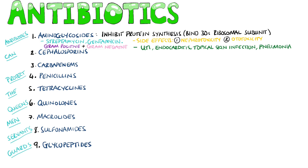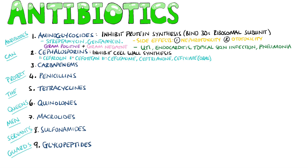Next we have the cephalosporins, which work by inhibiting cell wall synthesis. There are five generations. First generation are quite narrow spectrum and include cefazolin. Second generation is intermediate spectrum, with an example being cefotitan. Third generation are the most well-known, considered broad spectrum, and include cefotaxime, ceftriaxone, and cefixime. Note that ceftriaxone should not be given with calcium solutions as it can cause fatal calcium precipitation in the lungs and kidneys. Fourth generation adds pseudomonas cover, with cefepime as an example.